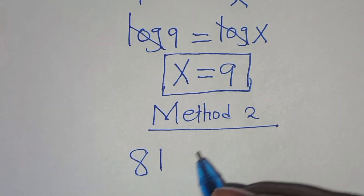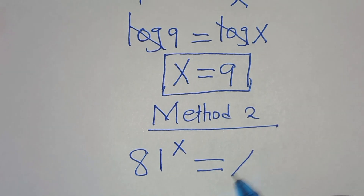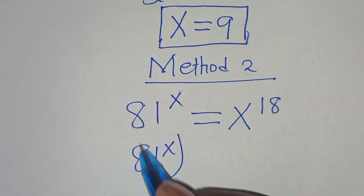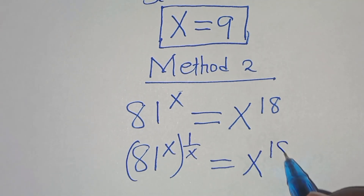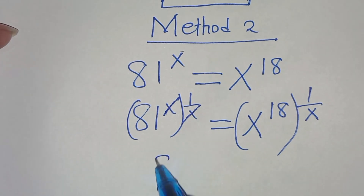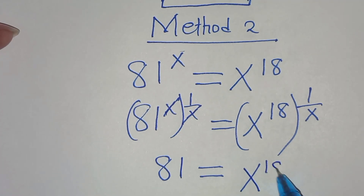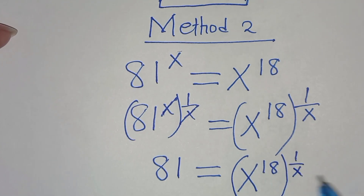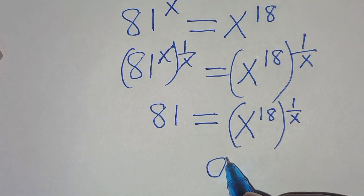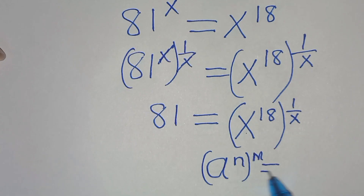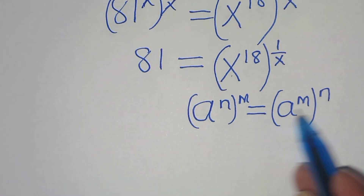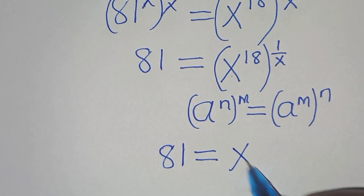Now let's apply Method 2. We have 81 raised to the power of x equals x to the power of 18. Let's eliminate the power here by multiplying both sides by 1 over x. This means 81 equals x to the power of 18 raised to the power of 1 over x. Applying the exponent property (a^n)^m = a^(n·m), we have 81 equals x to the power of 1 over x, all raised to the power of 18.